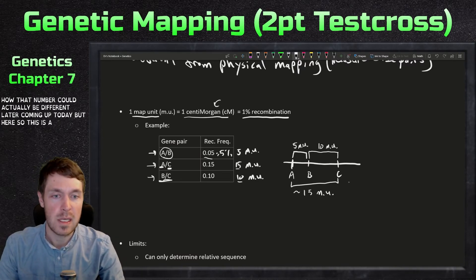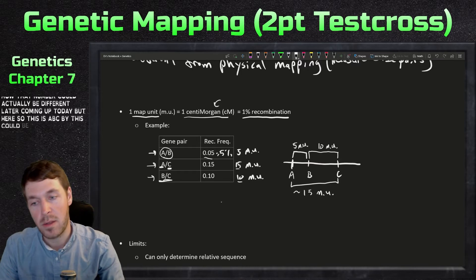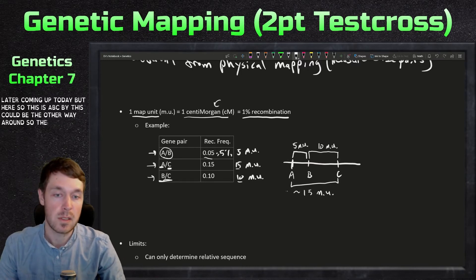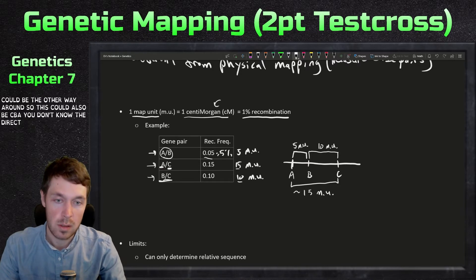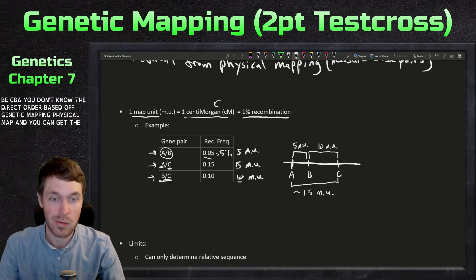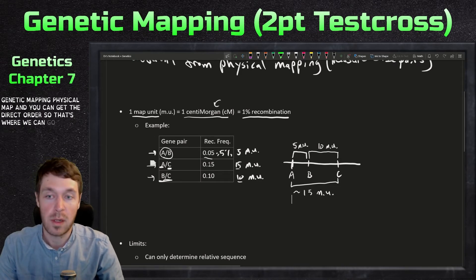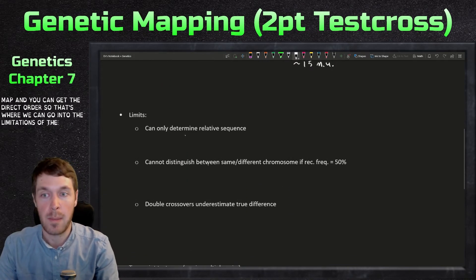But here, so this is A, B, C. But this could be the other way around. This could also be CBA. You don't know the direct order based off genetic mapping. Physical mapping, you can get the direct order. So that's where we can go into the limitations of genetic mapping.